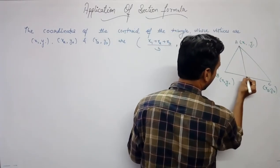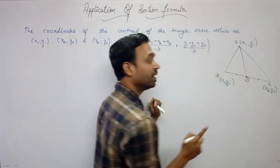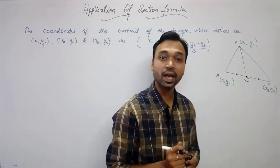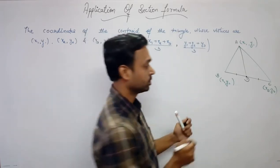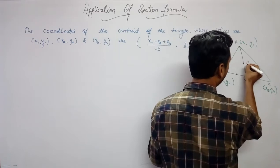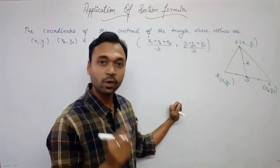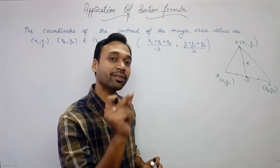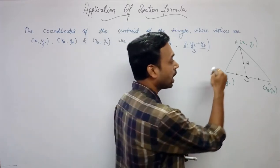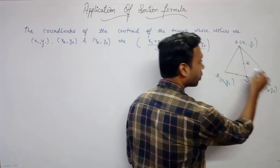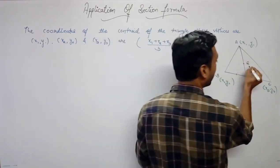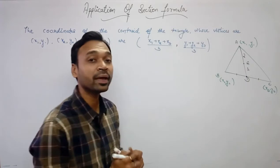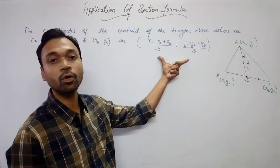I draw median AD, where D is the midpoint of BC. The centroid G will lie on this median AD. We saw that all three medians intersect at a point, so that point also lies on median AD. The centroid divides the median in the ratio 2:1, and we need to prove the coordinates of this centroid.